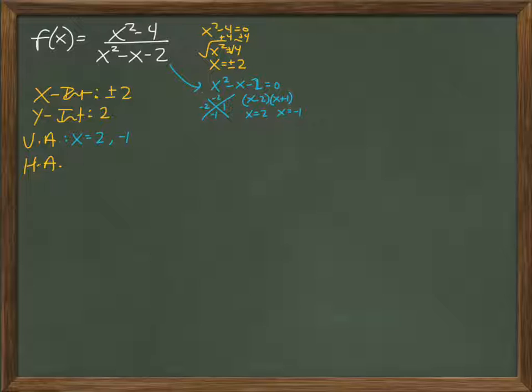Horizontal asymptotes: we look to the highest power, squared and squared, meaning they're equal to each other, meaning I just take the coefficients in front, which is 1 and 1, so 1 over 1 equals 1, so horizontal asymptote of 1.